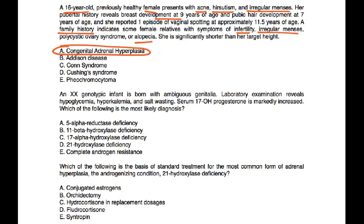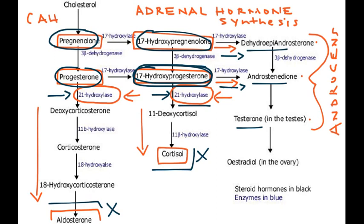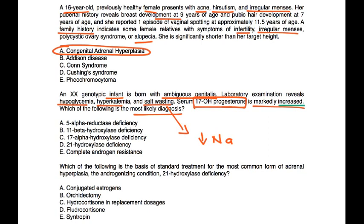Vignette 2: A XX genotypic infant is born with ambiguous genitalia. Lab exams reveal hypoglycemia, hyperkalemia, and salt wasting. Serum 17-hydroxyprogesterone is markedly increased. When they say salt wasting, they mean low sodium levels. Referring to the diagram, 17-hydroxyprogesterone is elevated because 21-hydroxylase is deficient — that pathway cannot move forward to produce cortisol, so the precursor keeps building up. The most likely diagnosis is 21-hydroxylase deficiency.